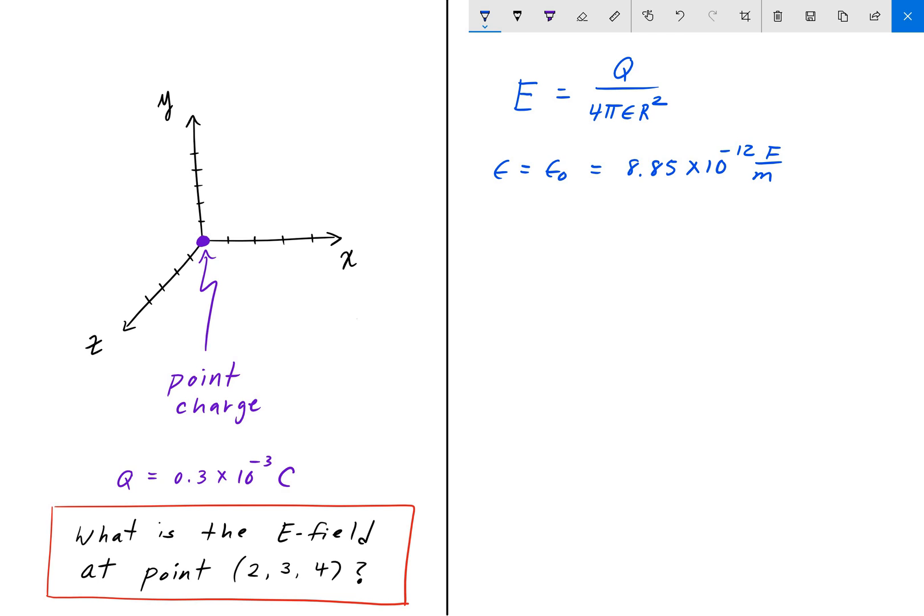So now we know everything here to solve this equation. We know Q, π is just a constant, epsilon is just a constant. We need to find R.